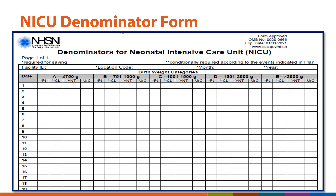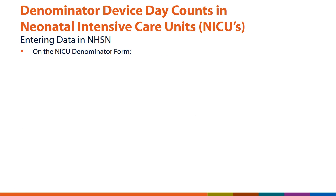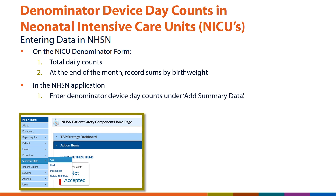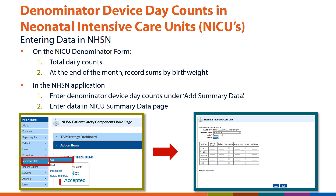This is the NICU denominator form. The denominator device day counts for central lines are recorded in the column denoted CL for each birth weight category. When entering the data on the NICU denominator form, total the daily counts. At the end of each month, record the sums by birth weight. When entering summary data in the NHSN application, enter denominator device day counts under the option to add summary data, then enter the data in the NICU summary data page.